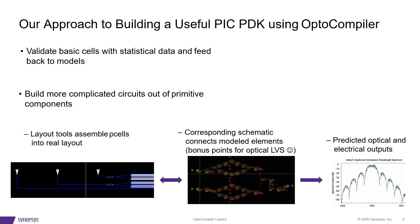You have to validate those basic cells with statistical data and feed it back to the model. If you have a very primitive simple element, it's very easy to get a lot of data and see if your models are correct. We collect a lot of statistical data, feed it back to the models — same as in the electronics world, where you have a field effect transistor model based on physics, test it in real life, and come back and fix the model.